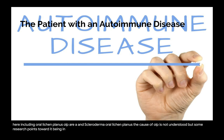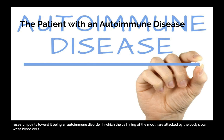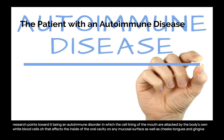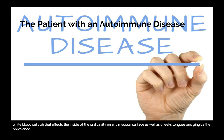Oral lichen planus (OLP) is a chronic inflammatory disease in which the body's own white blood cells attack the cell lining of the mouth. It affects the inside of the oral cavity on any mucosal surface, including cheeks, tongue, and gingiva. The prevalence is approximately 0.5% to 2% of the population.